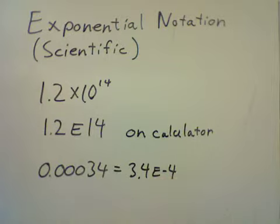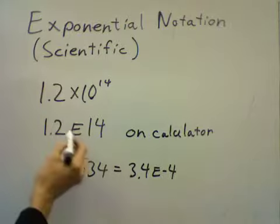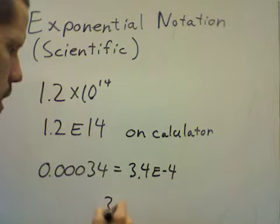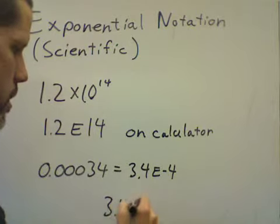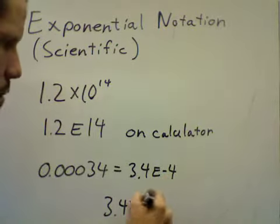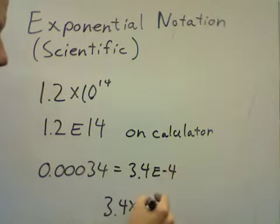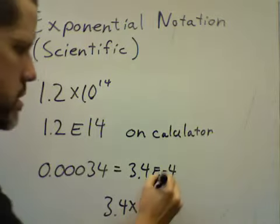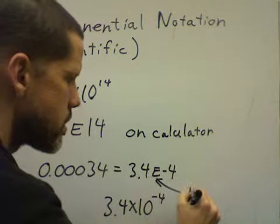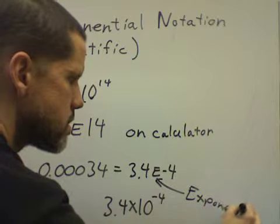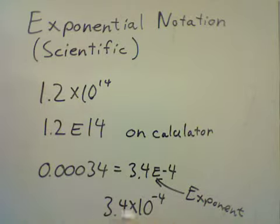Well, 3.4E minus 4. E means times 10 to the whatever. So 3.4E minus 4, I would write 3.4 times 10 to the minus 4. So this number up here is the exponent there. E is short for the word exponent. 3.4 times 10 to the minus 4 is the same thing as 3.4E minus 4.